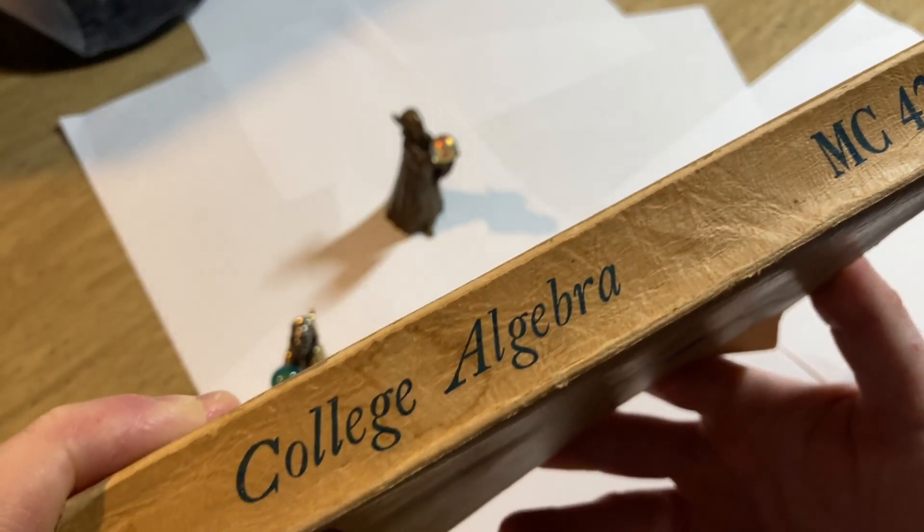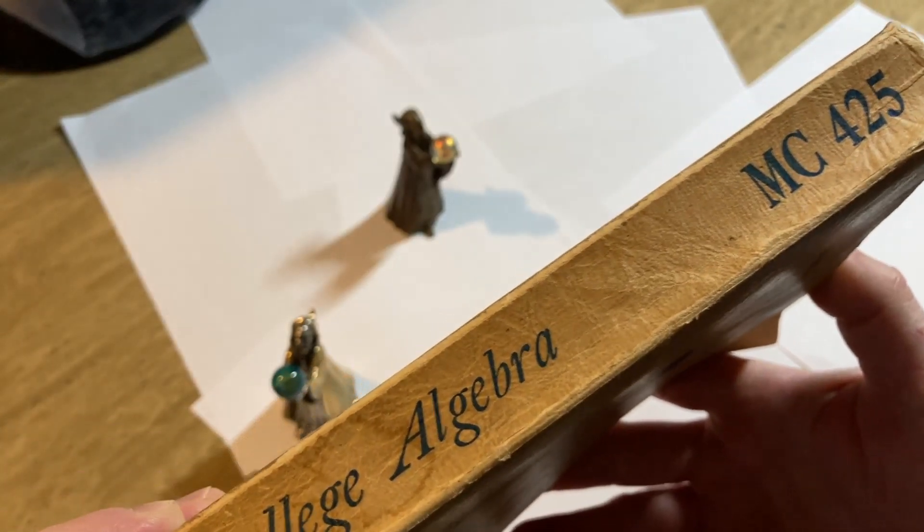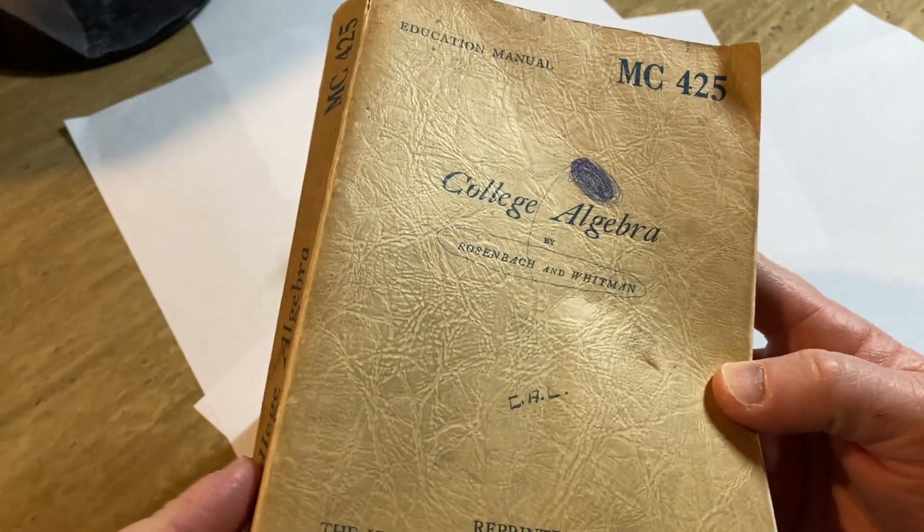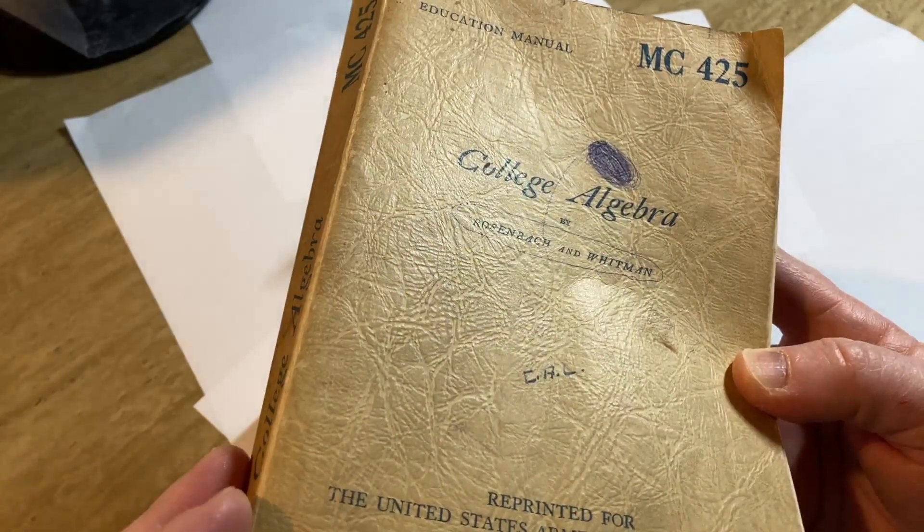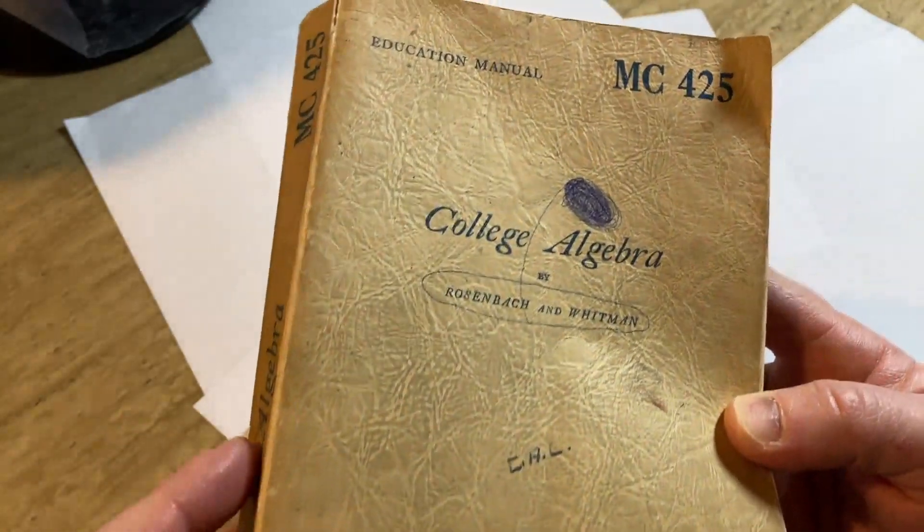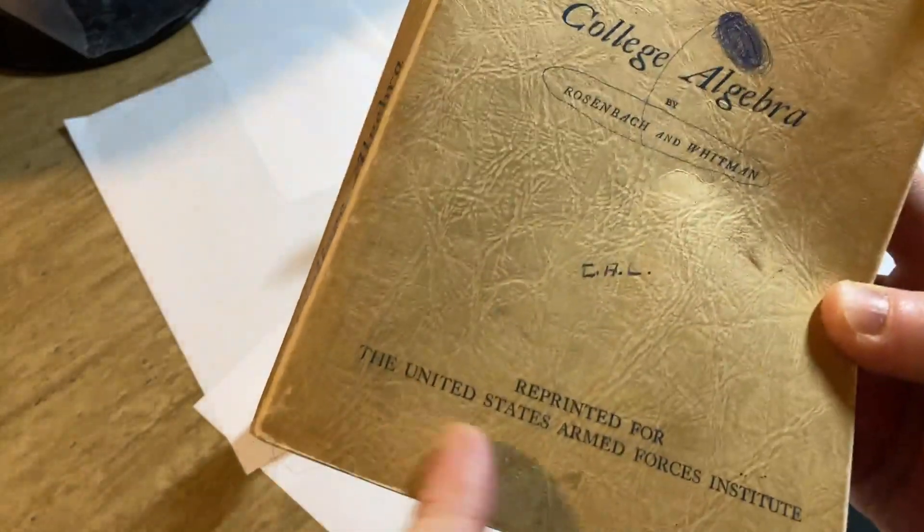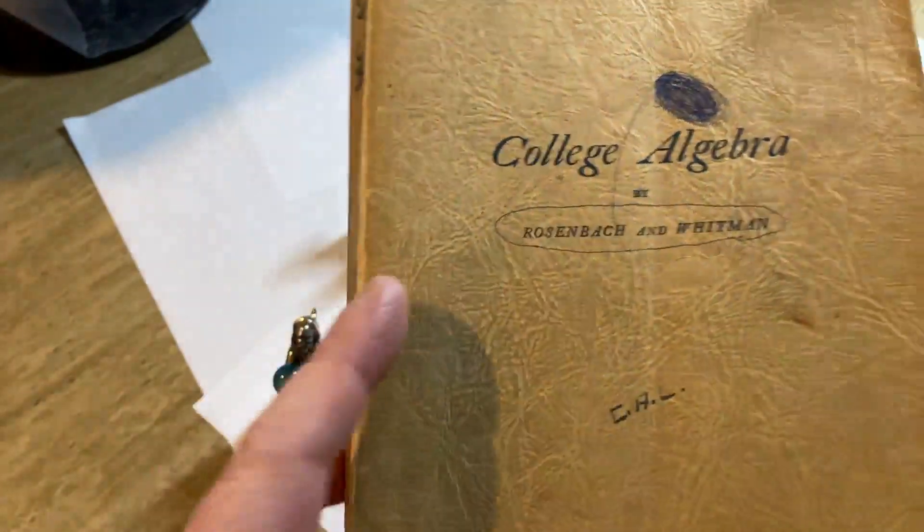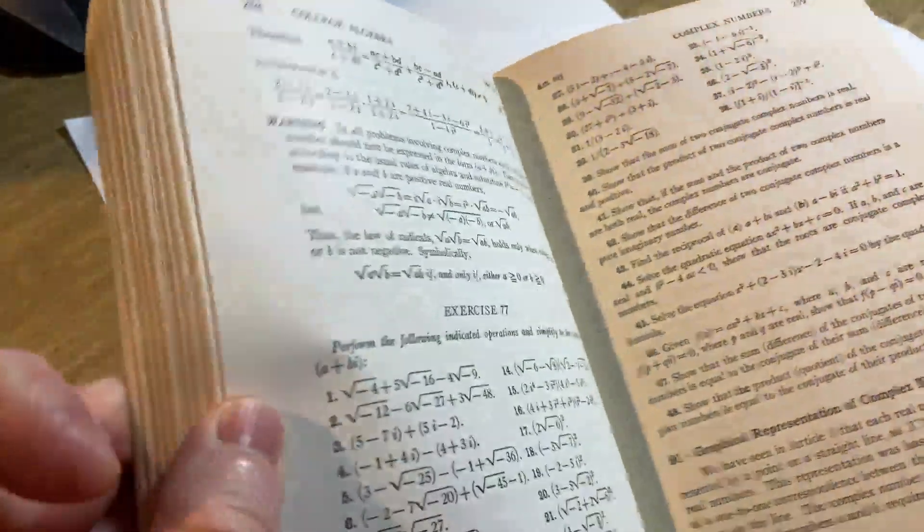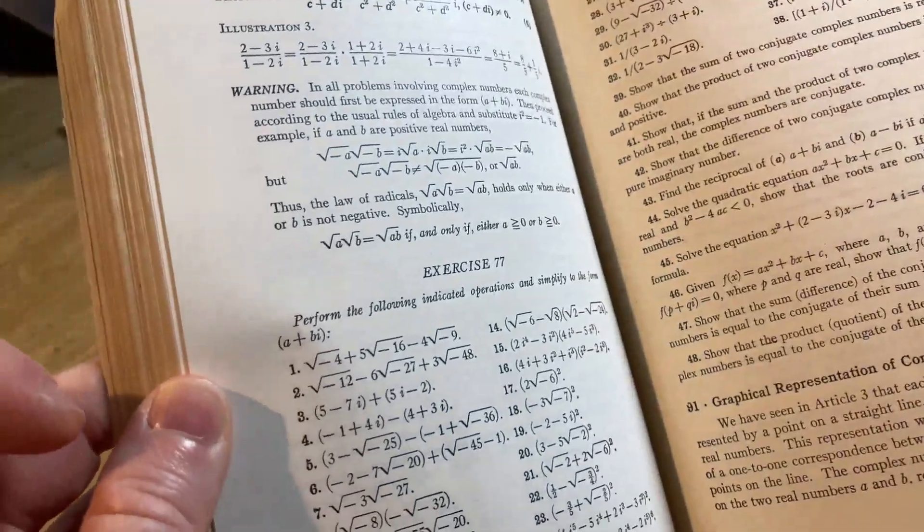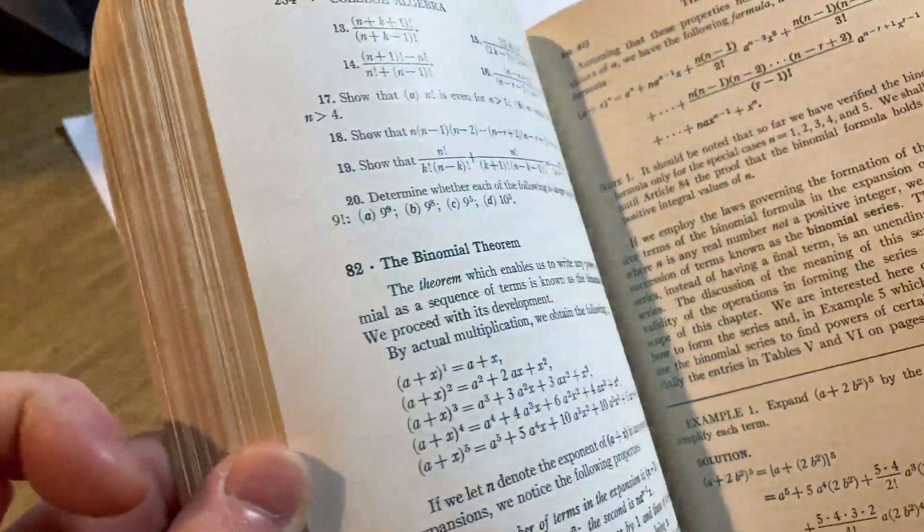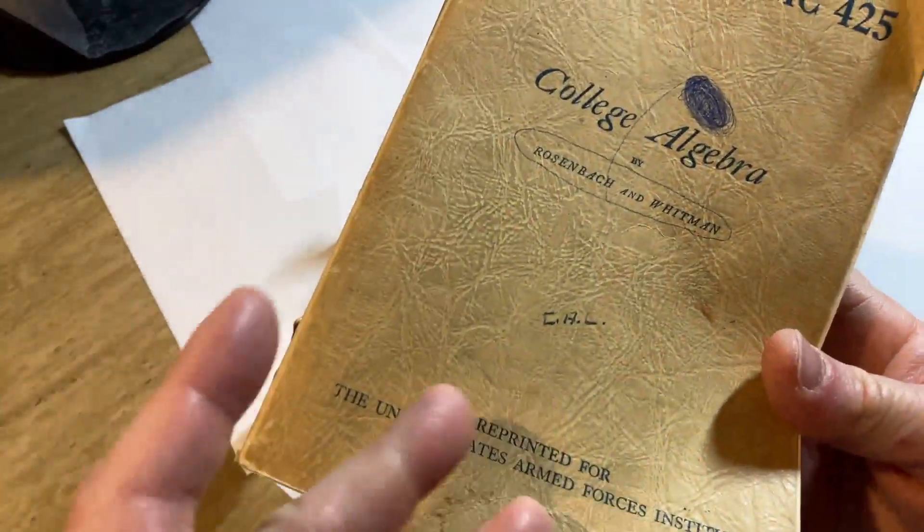The United States Armed Forces Institute was founded in April of 1942 as the Army Institute, and it survived for many years. April 1942, that was during World War II. That's when this educational institution was founded, and they provided education and testing services to people in this institute in Europe, in the United States, in the Caribbean, Hawaii, et cetera. It's a really big organization. I don't really know much else about it. I don't know why it ceased to exist. But I think it's interesting that there was an institute like that.